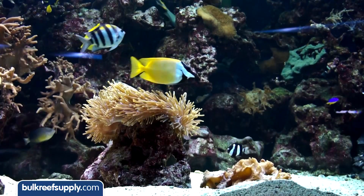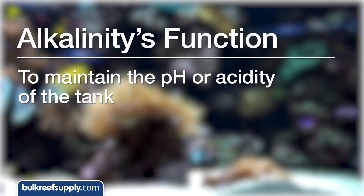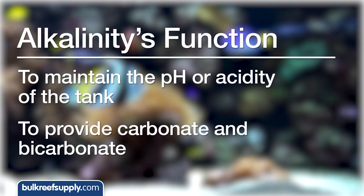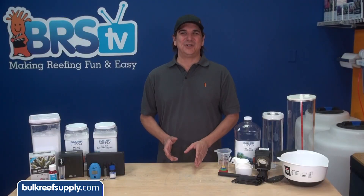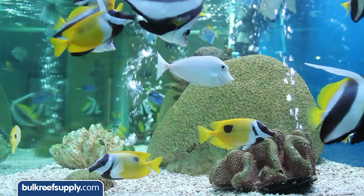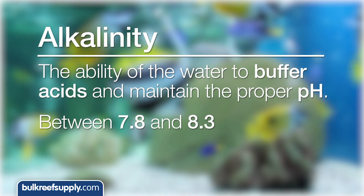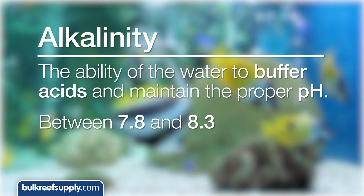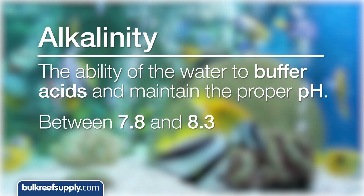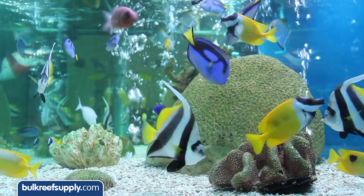Alkalinity serves two major roles in the tank: first is maintaining the pH or acidity of the tank; second is providing carbonate and bicarbonate, which is the basis for how corals stay healthy and grow. In relation to a fish-only aquarium, alkalinity commonly refers to the ability of the water to buffer acids and maintain proper pH between 7.8 and 8.3. Occasional addition of an alkalinity additive or even just a good water change schedule with a decent salt could be all you need to maintain your fish-only tank's alkalinity and in turn the pH.